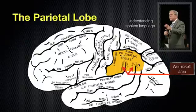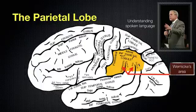If there's damage to this area — lesions in Wernicke's area — that can result in Wernicke's aphasia, which is an impairment of comprehension and repetition. You have a hard time understanding spoken language because of the damage in this area.